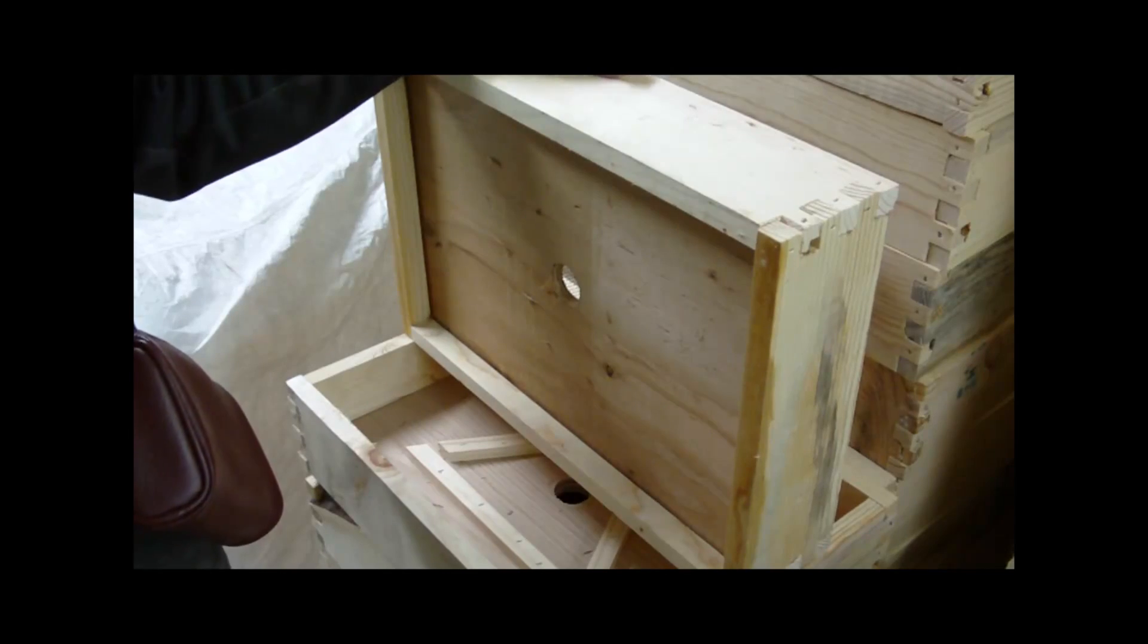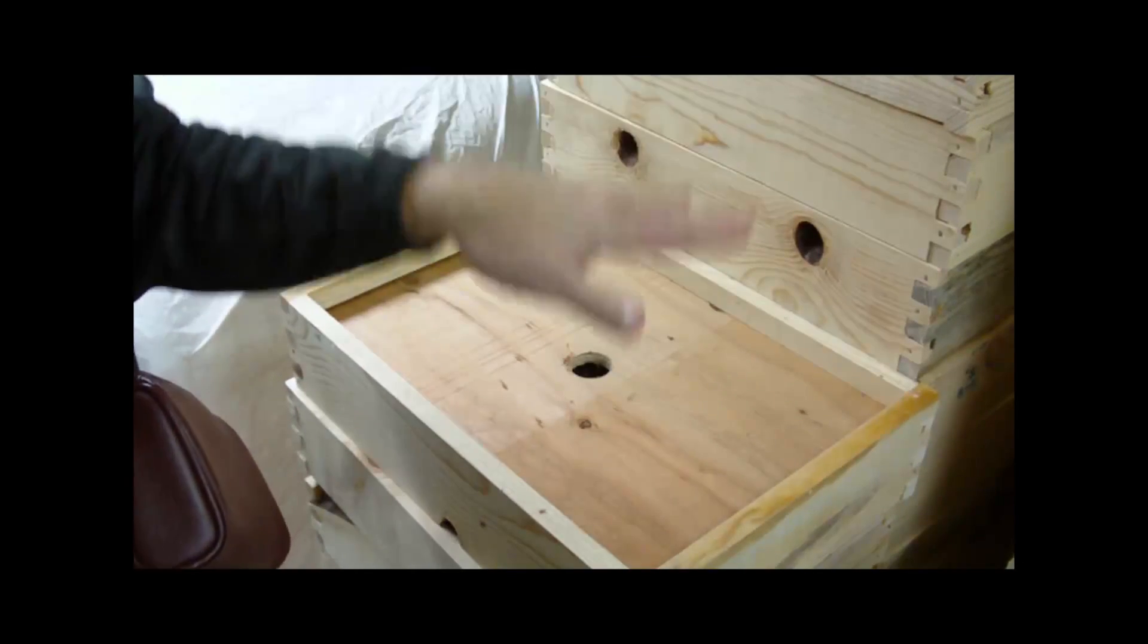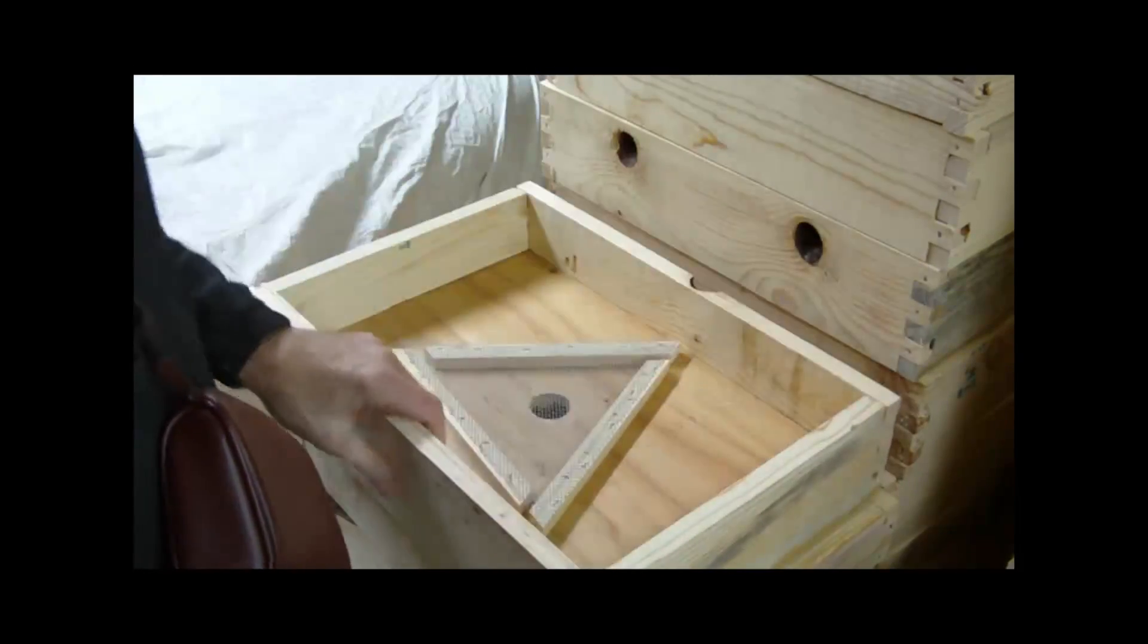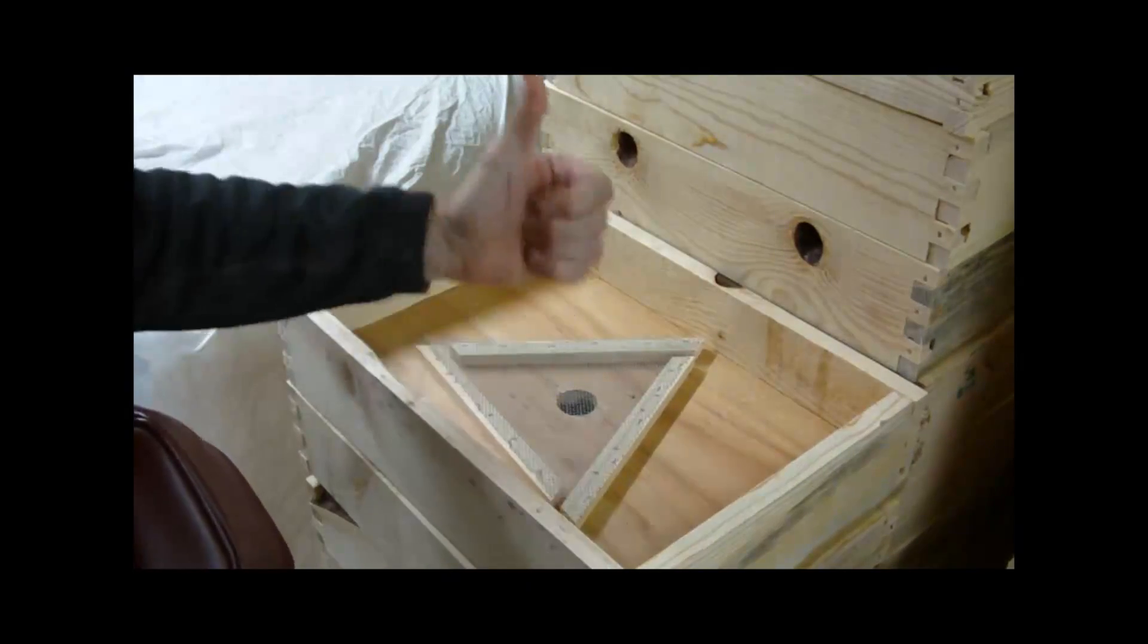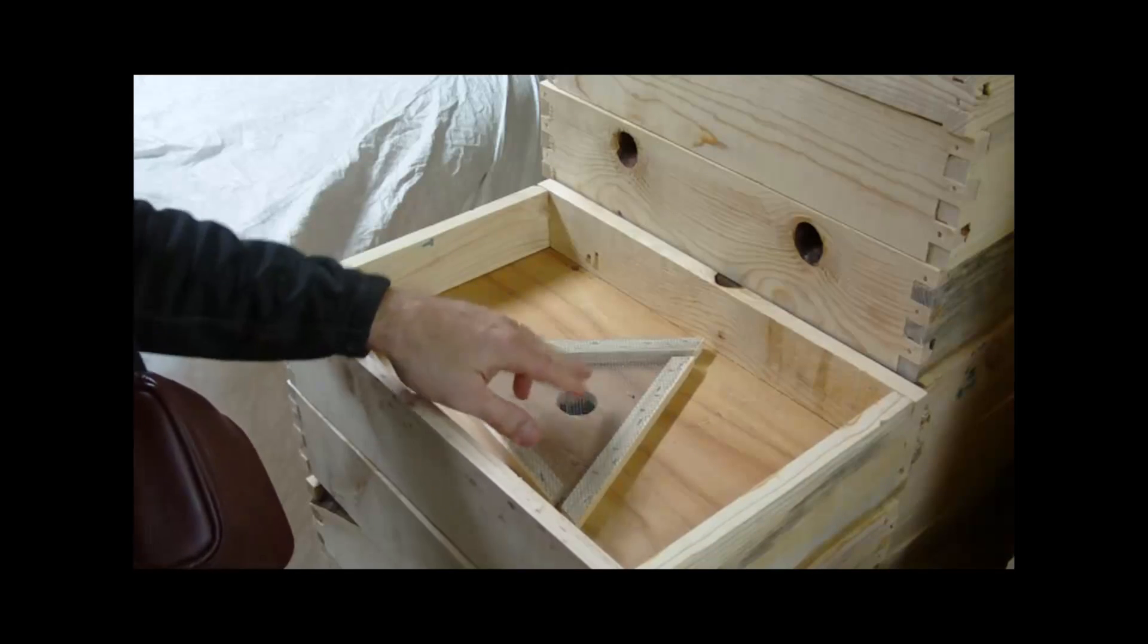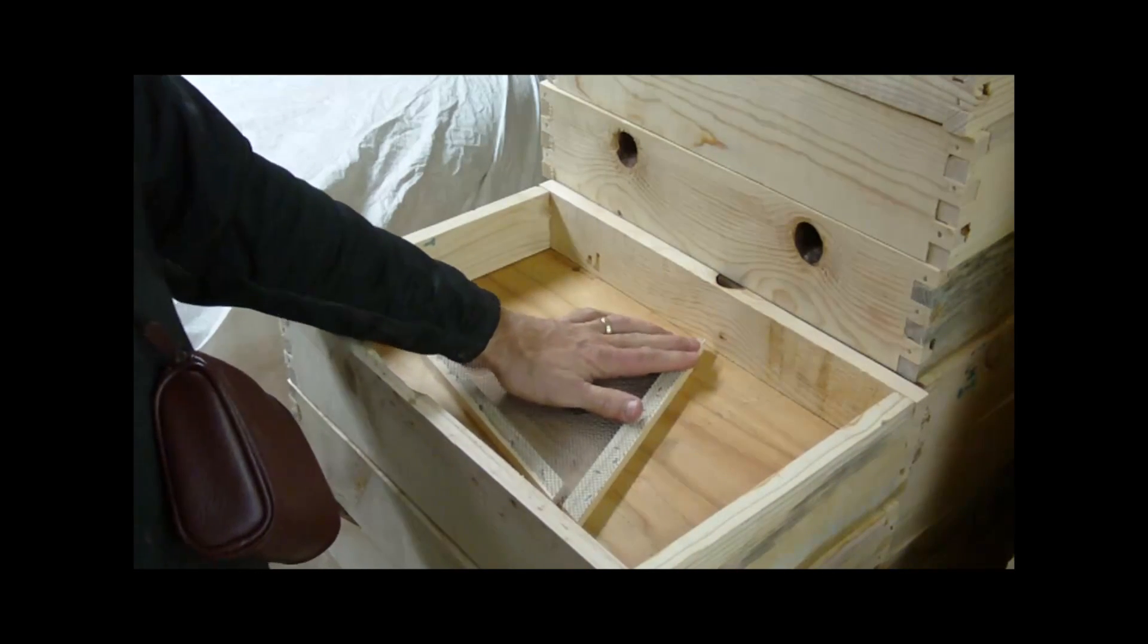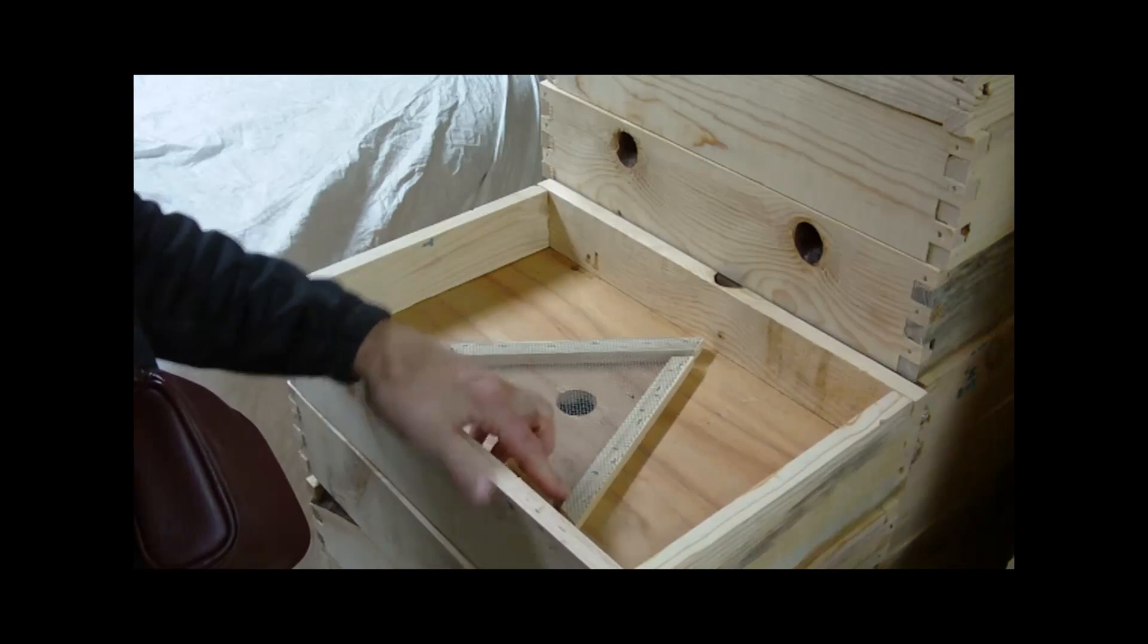On the back side, this would be installed with the supers on top going this way, or it would be installed in this direction if there were supers below here. The bees are escaping upward through the hole into this area out these escapes, and then they tend to cluster over the hole but can't find the escapes to get back in.